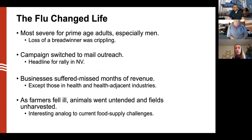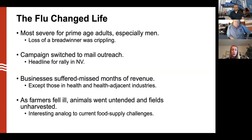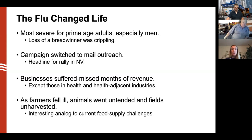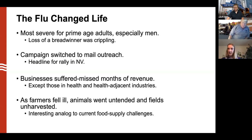The flu changed life significantly. The 1918 flu virus was most severe for prime-age adults, especially men — very different from now, where those 65 or older and people with underlying health conditions are most at risk. Back then, the healthiest people had the strongest immune reactions and the worst outcomes, making young working-age men especially vulnerable. Families were often losing a breadwinner, which was economically crippling at the household level. In Wisconsin, an election campaign switched to mail outreach versus in-person rallies, and similarly in Nevada, a campaign rally was shut down because of the epidemic.